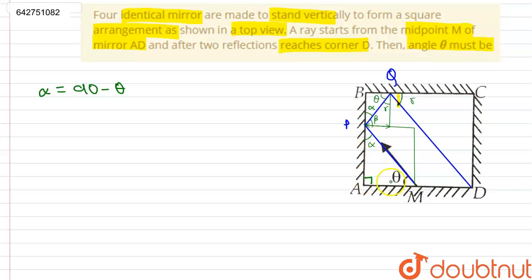Alpha is 90 minus theta, as you can see this angle is theta and this is 90 degrees. The angle beta will be equal to 90 minus (90 minus theta) which equals theta. Therefore this angle beta equals theta.